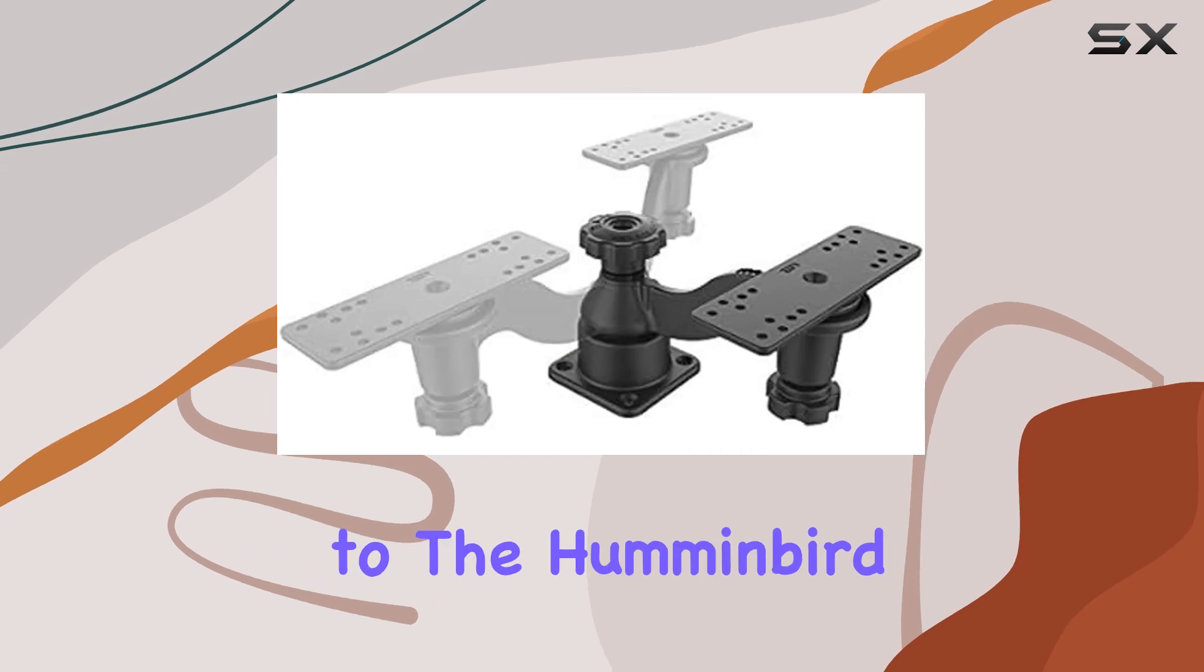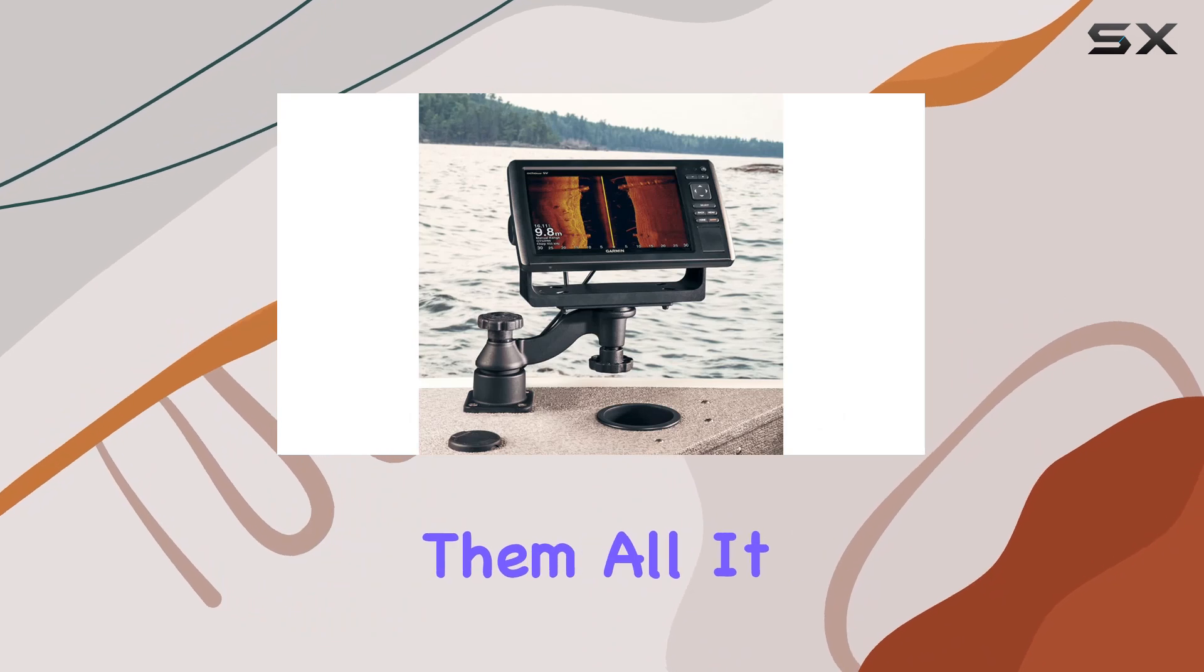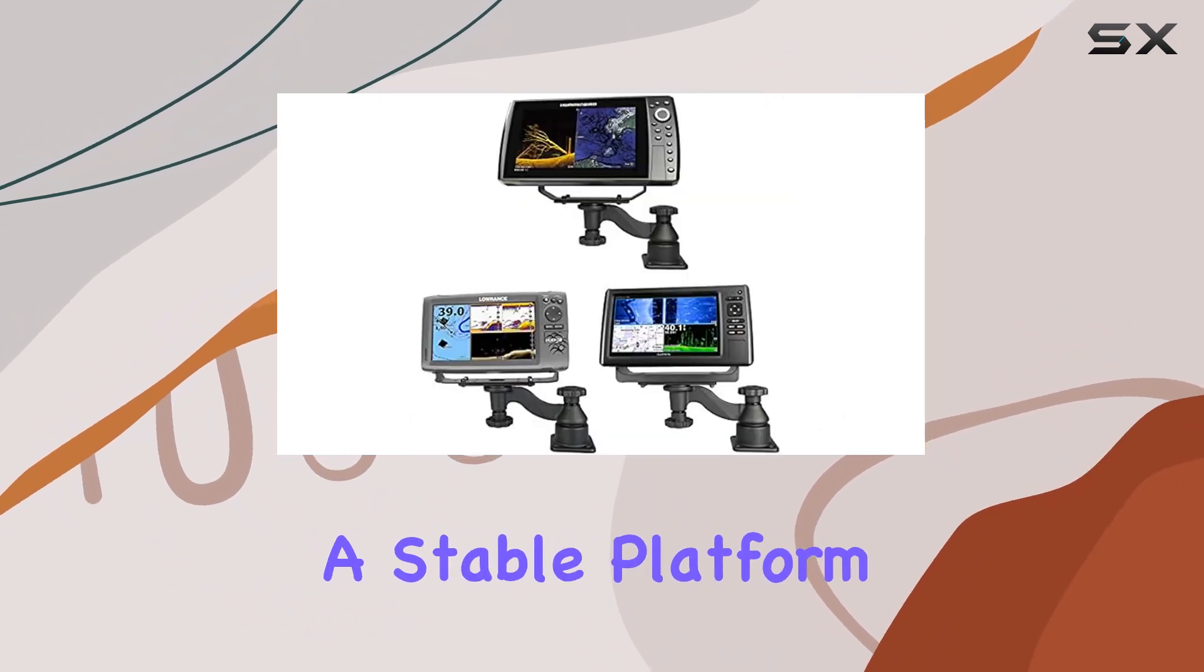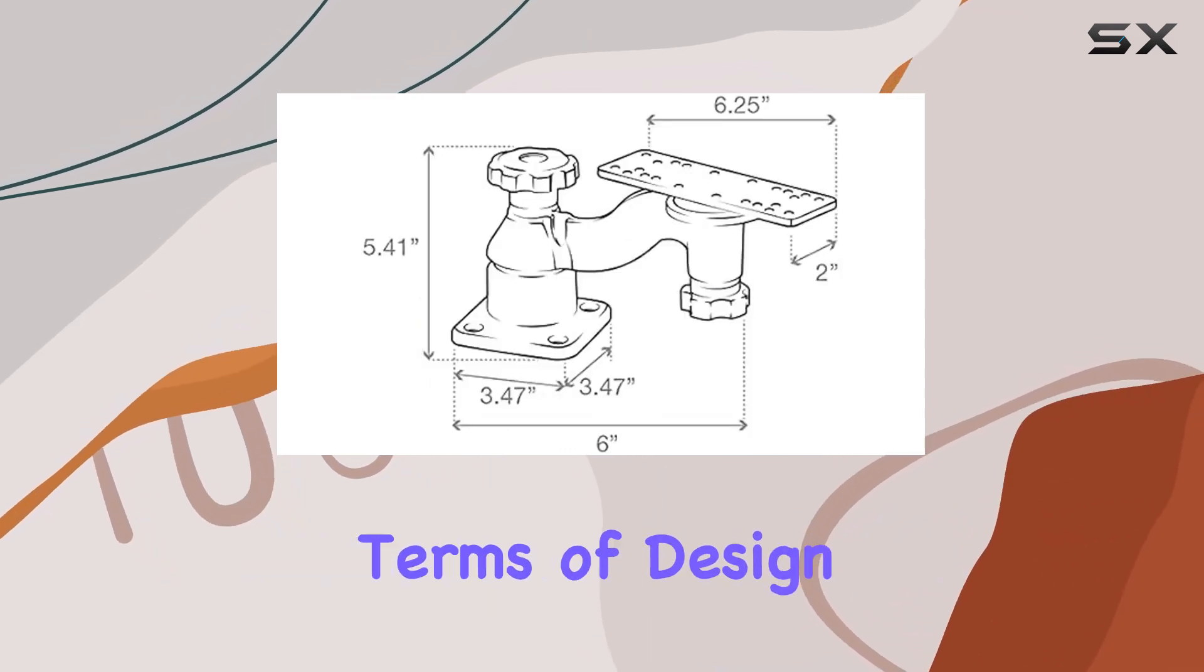From the Garmin EchoMAP and GPSMAP series to the Humminbird Helix and Lowrance HDS Carbon and LIVE models, this mount handles them all. It even supports larger units like the Lowrance HOOK 9, providing a stable platform that reduces vibrations and enhances readability.